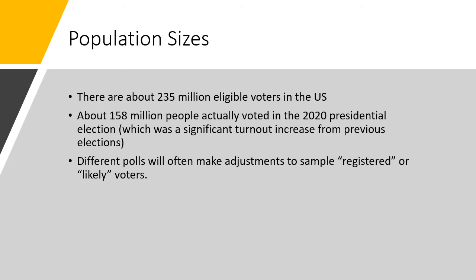Different polls will often make adjustments to sample registered voters or likely voters, especially election polls. Election polls have to make an additional determination: they're not just trying to figure out what people think generally — they have to figure out who is actually going to vote. So they have to filter their sample not only by education, income, race, and gender demographics, but also try to figure out who in the sample is actually likely to vote, because that really affects the usefulness of the poll for forecasting.